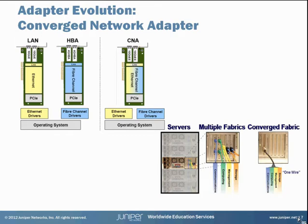Let's say a customer has four different types of connections: a storage connection, a network management connection, IP traffic, and other IP communications for an application. Once CNA is introduced, all the cables shown in the bottom will be replaced with one wire seen here on the right.